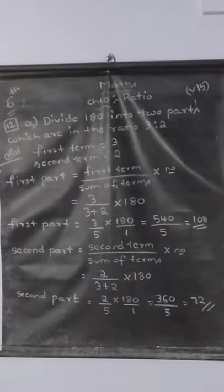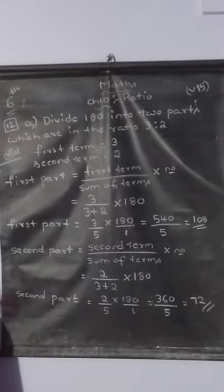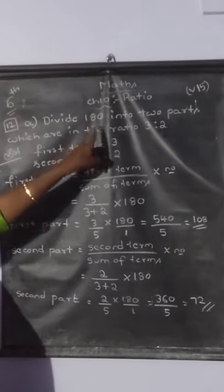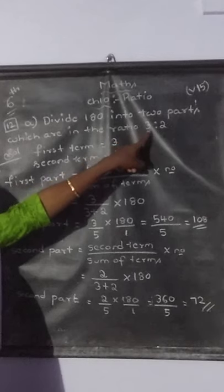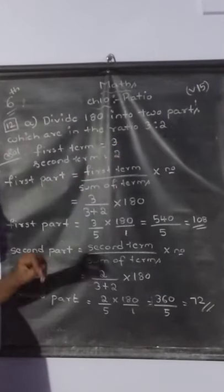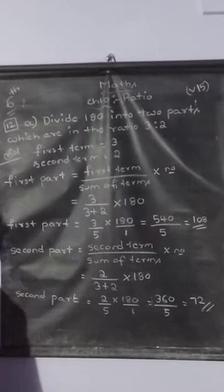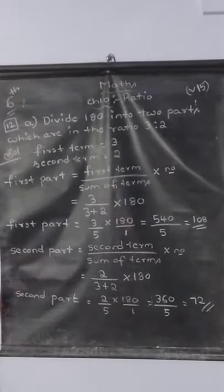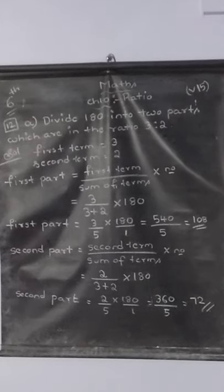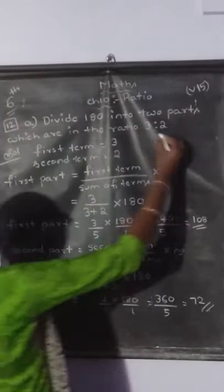So totally, a bulk amount of 180 is distributed into 2 parts in the ratio 3 is to 2. The first part will be 108 and the second part will be 72. Have you understood how to divide anything into 2 parts? This formula you should remember.